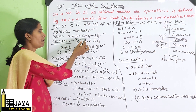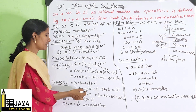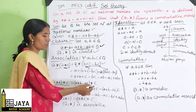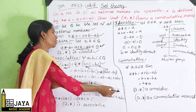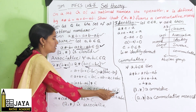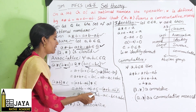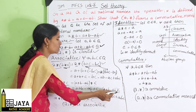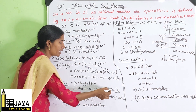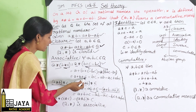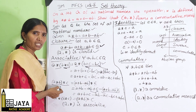Now computing A★(B★C): A★B means A + B − AB, so A★(B+C−BC) gives A + B + C − AB − AC − BC + ABC. This equals the previous result, therefore (A★B)★C = A★(B★C), so (Q, ★) is associative.